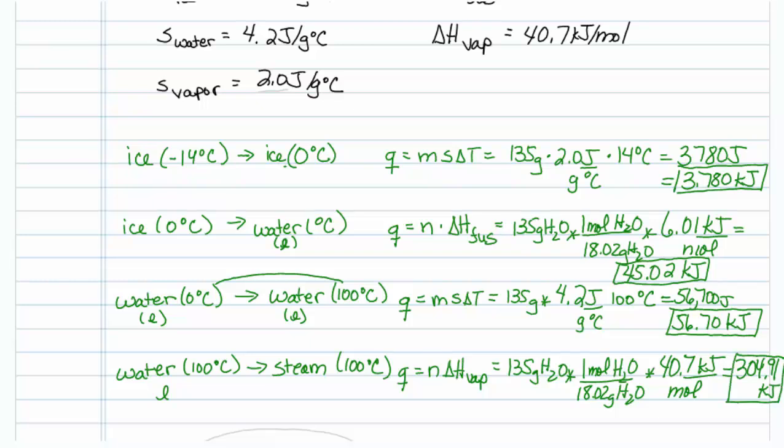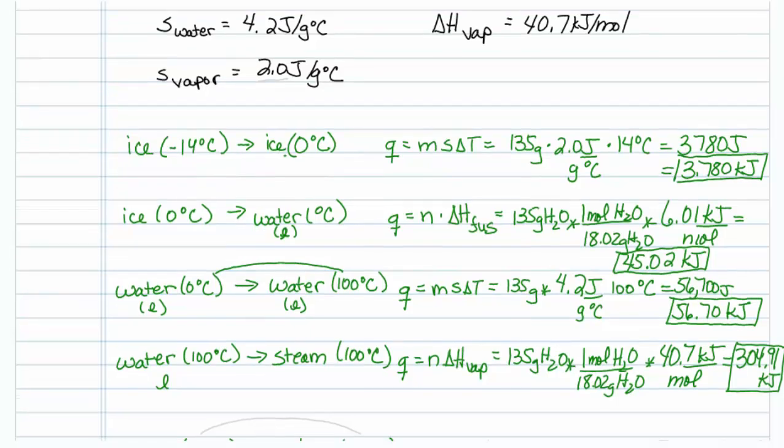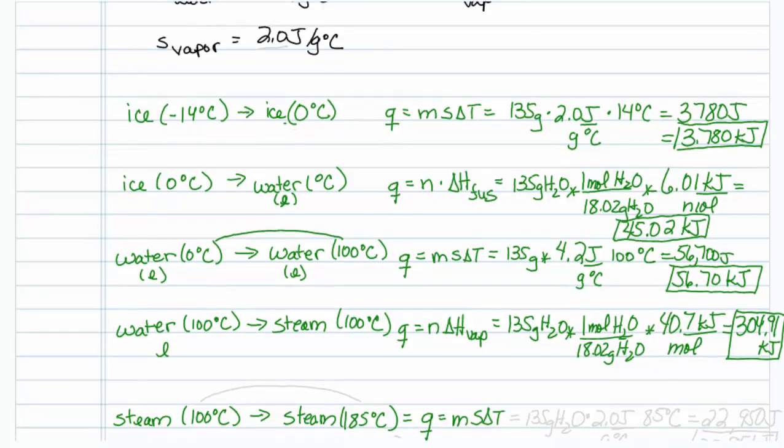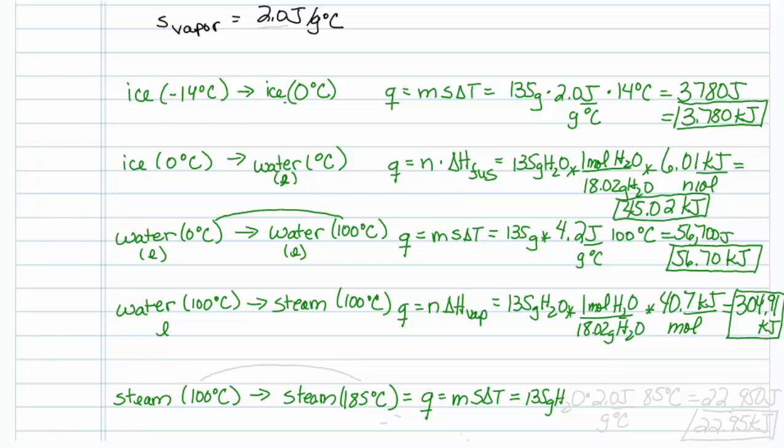Last calculation: changing the temperature of the steam. That's going to be M S delta T. I have 135 grams of water. The specific heat of the steam is 2 joules per gram degrees Celsius. And I am trying to get from 100 to 185. So the temperature difference there would be 85 degrees Celsius. This turns out to be 22,950 joules or 22.95 kilojoules.